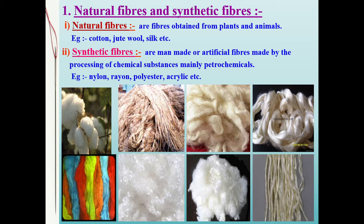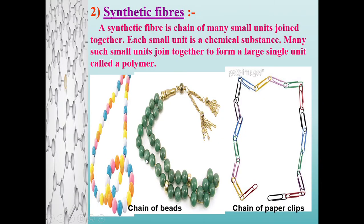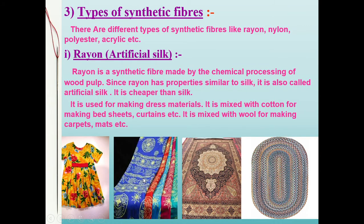Natural fibers are obtained from plants and animals — cotton, jute, wool, silk, etc. Synthetic fibers are also called artificial fibers or man-made fibers and are obtained from petrochemicals. Examples include nylon, rayon, polyester, and acrylic. Synthetic fibers are polymers of repeating units — just like beads joined into a variety of chains, monomers can be joined in different ways to produce different kinds of fibers.